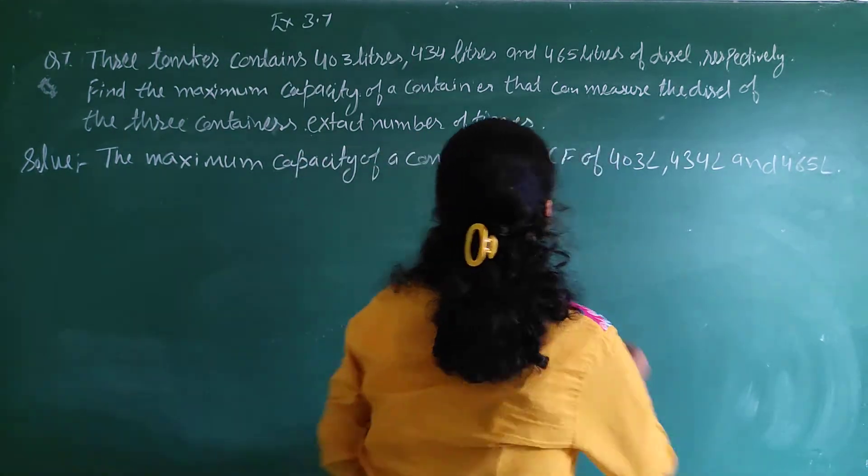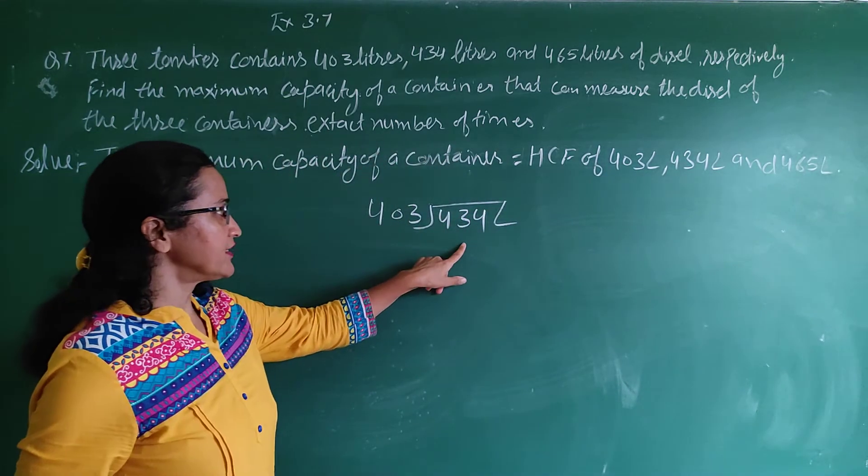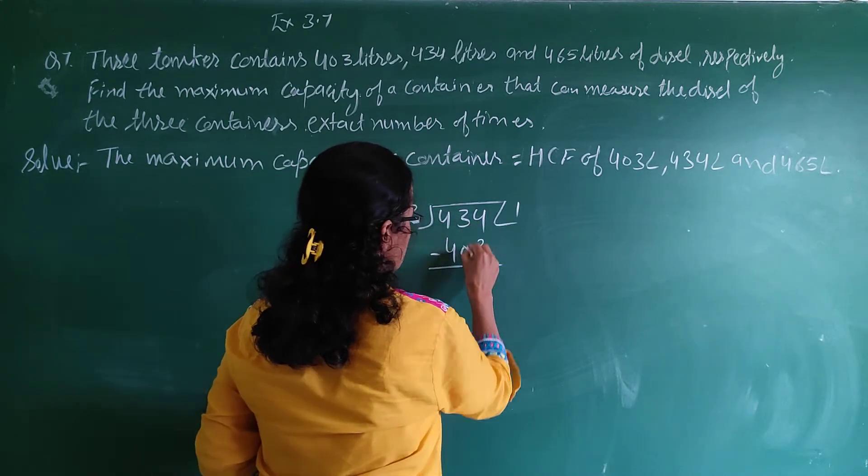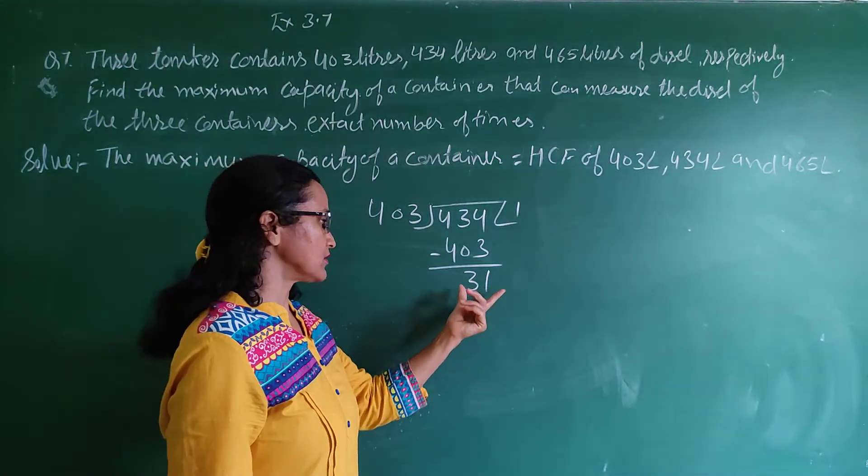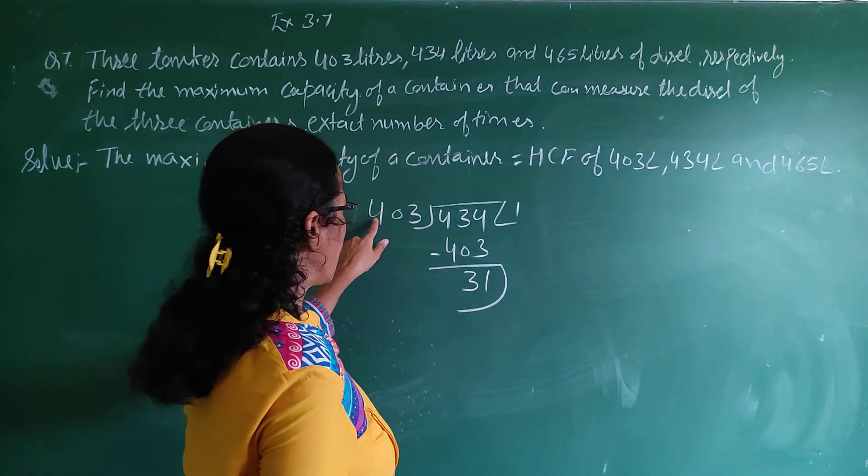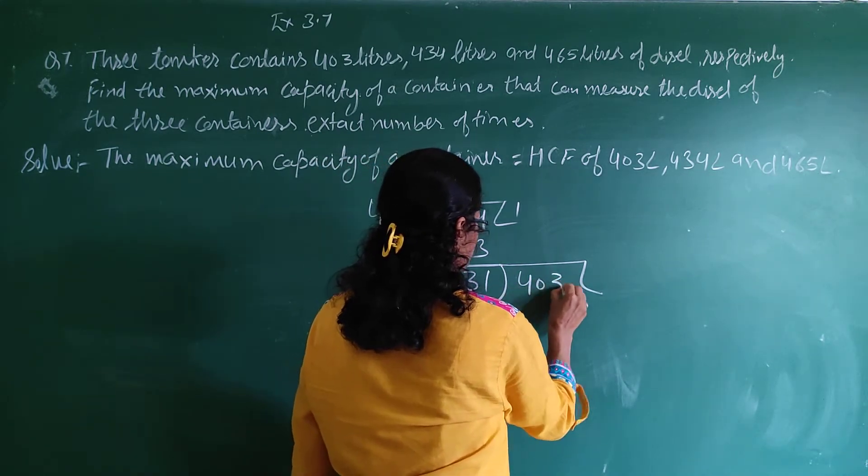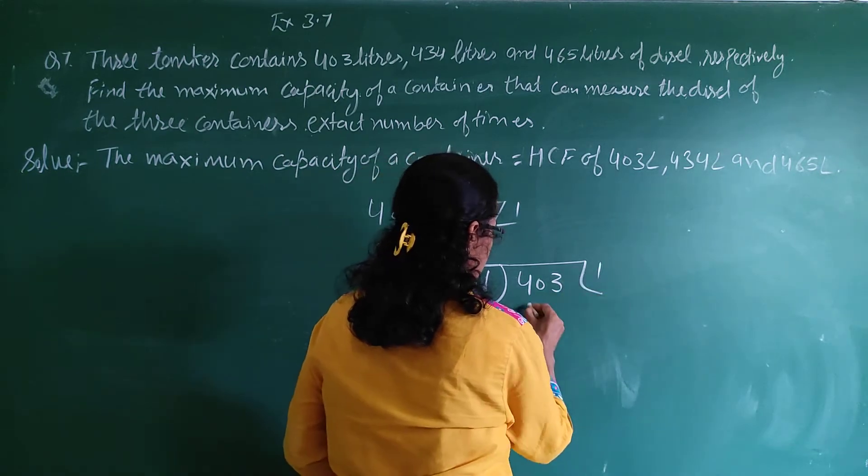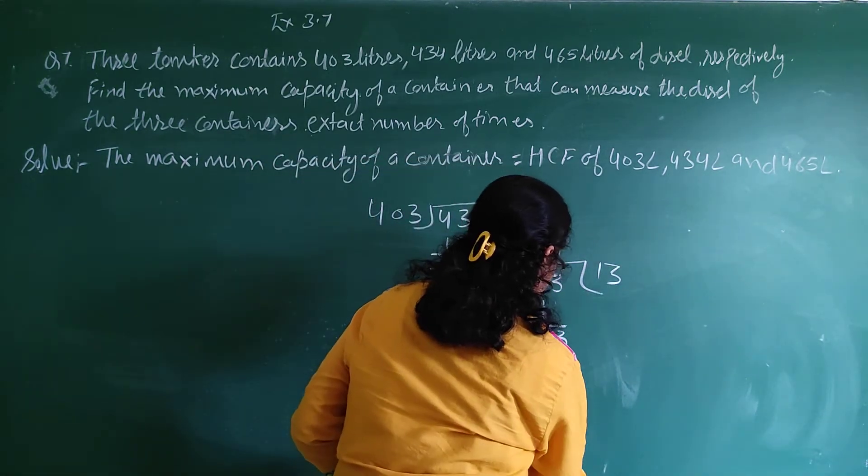So write here, first take two numbers and find the HCF. 403 divided by 434. Now divide it. 403 by 403, so minus 4, minus 31. This is your 31. Now divide 403 by 31. Now divide it. So here is 93, so by minus this will be zero remainder.